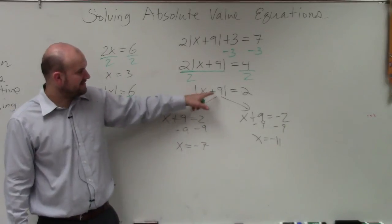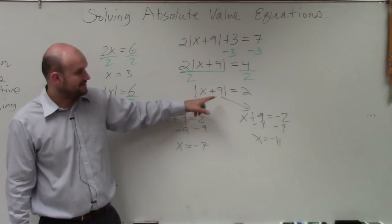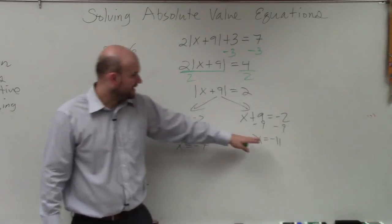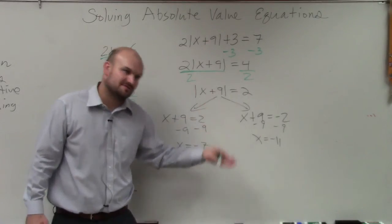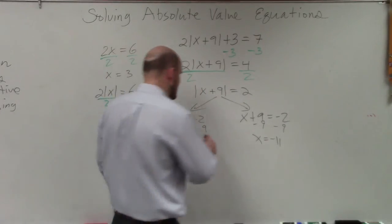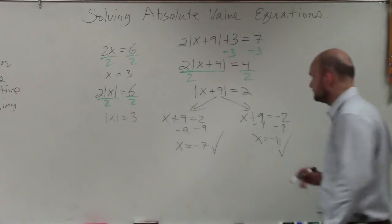So negative 7. Negative 7 plus 9 is 2. Absolute value of 2 is 2. Negative 11. Negative 11 plus 9 is negative 2. Absolute value of negative 2 is 2. They both check out.